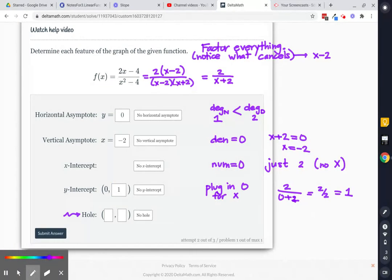Finally, the hole. And this one, for the hole, this is one that's maybe a little bit different. That x minus 2 cancels. X minus 2 is what canceled. So since x minus 2 cancels, our hole has an x-coordinate of 2.